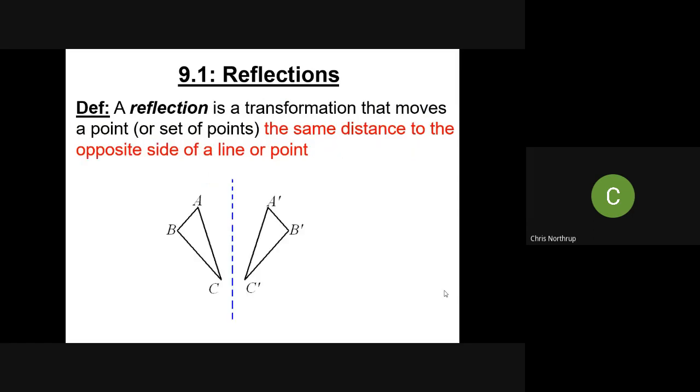So for example, here, if I take triangle ABC and that blue dotted line, if I flip that over that blue dotted line, the same distance. So let's say I measure from point A to that blue dotted line. Let's say that that's three feet. Now, if I went three feet to the opposite side of that blue dotted line, that's where A prime would be. And then the same would go for B and C. If I measure the distances from each point to that blue dotted line, they should be the exact same distance on opposite sides.